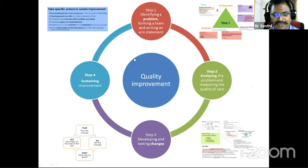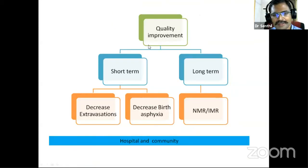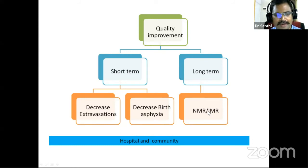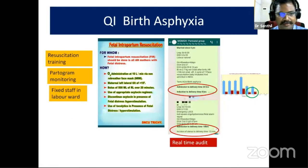Quality improvement steps are: first, identify the problem; second, make a team — that is very important; third, analyze the problem; fourth, make a change in the system; and fifth, assess whether the change is achieving the desired outcome. If it is, sustain it. When looking for quality improvement steps, go for short-term wins first so we can get results easily and motivate ourselves to tackle long-term projects, with the ultimate aim of decreasing MMR.